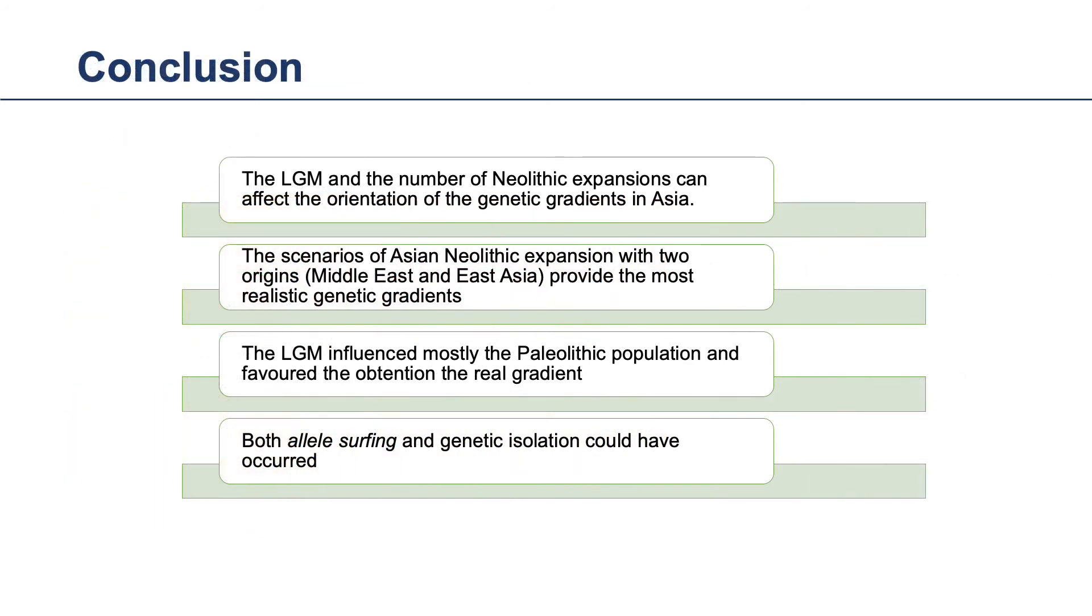To conclude, both the LGM and the number of Neolithic expansions influenced the genetic gradient. The scenarios with two Neolithic expansions revealed the most realistic gradient. LGM influenced mostly the Paleolithic population and favored the obtention of the real gradient. And finally, both allele surfing and genetic isolation could have occurred.